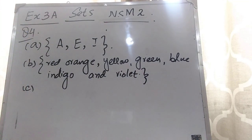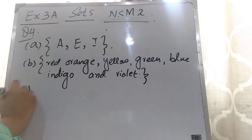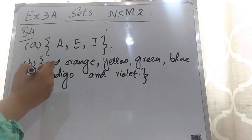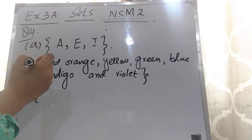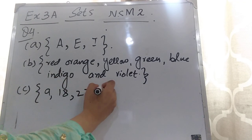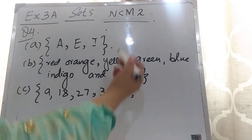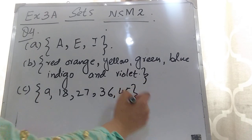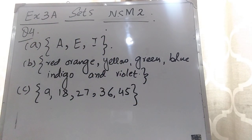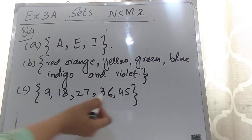Now the next part: multiples of 9 which are less than 50. You have to write the multiples of 9 less than 50. Using the 9 times table: 9×1=9, 9×2=18, 9×3=27, 9×4=36, 9×5=45. Then 9×6=54, which is greater than 50, so we stop there. So the multiples of 9 less than 50 are {9, 18, 27, 36, 45}.